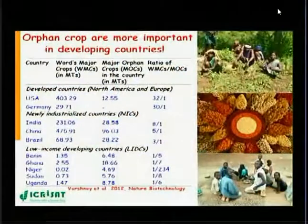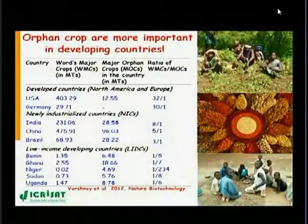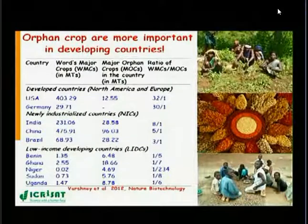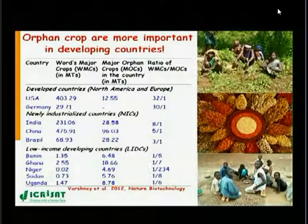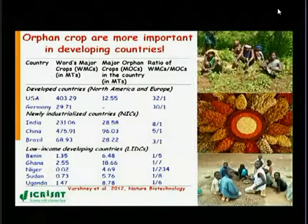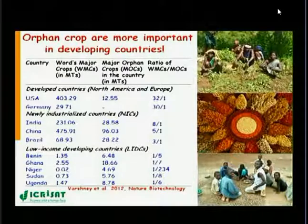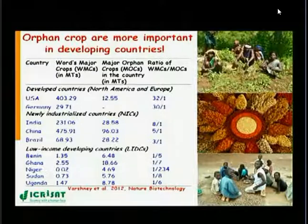When we talk about food security or international agriculture, generally we talk about three major crops: maize, rice, and wheat. But in addition to these three major crops, there are many other crops which are very important in developing countries in terms of production as well as ensuring food security and income generation. These crops include several legumes like chickpea, cowpea, pigeon pea, sorghum, and millet. Because these crops have not received the attention of the international scientific community, they are often called orphan crops. These crops are grown in marginal environments by resource-poor farmers, and crop productivity is very low.